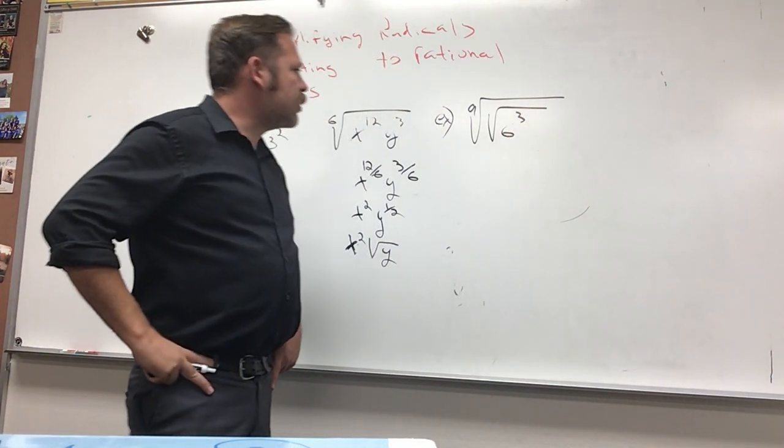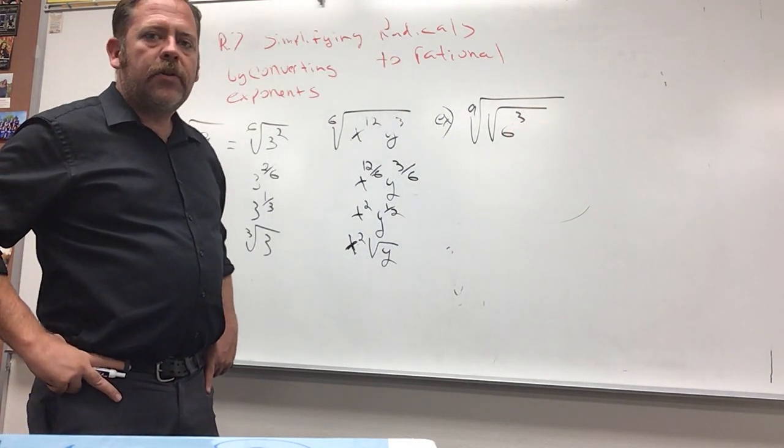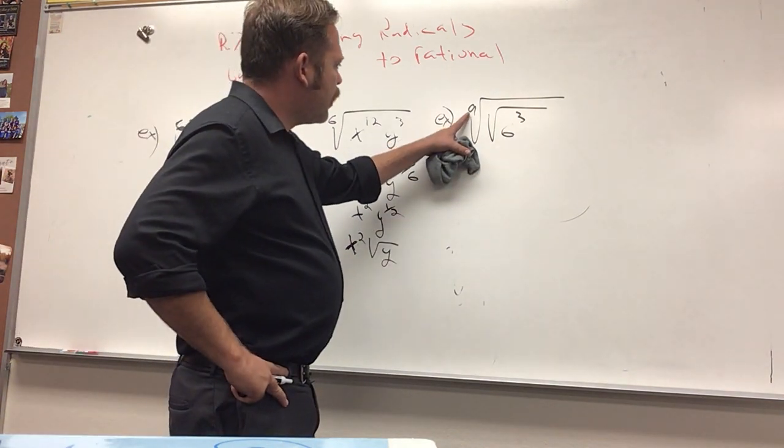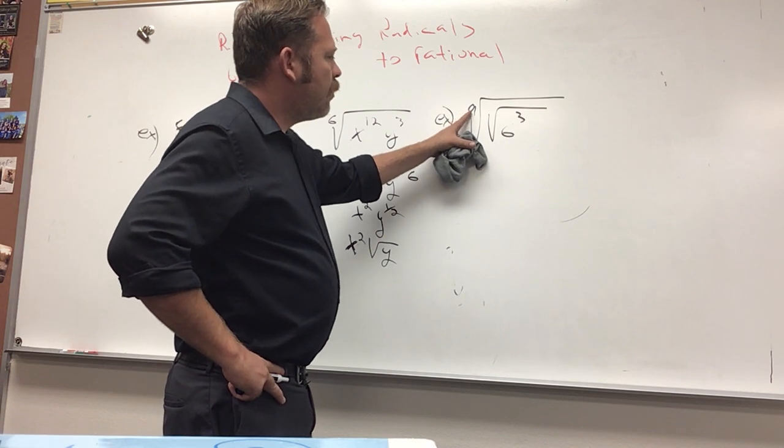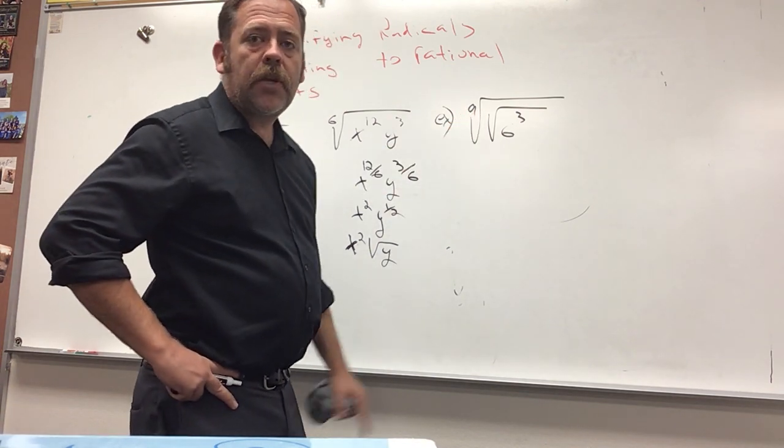So, this is pretty neat because we're just looking at what we know about roots. If you remember, this is a ninth root. This is the square root. And if you want to do a root of a root, you can just multiply the root numbers.